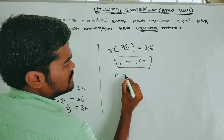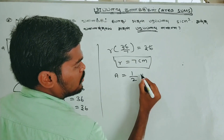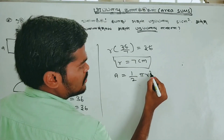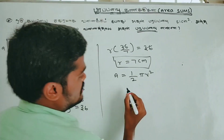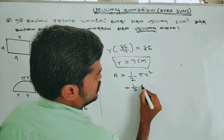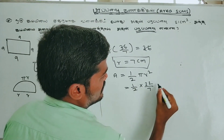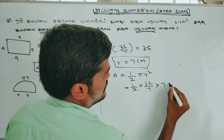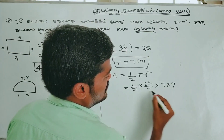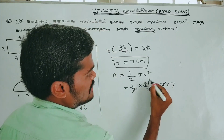Area of semicircle = (1/2)πr² = (1/2) × (22/7) × 7 × 7 = 77 cm². That is the required area of the semicircle.